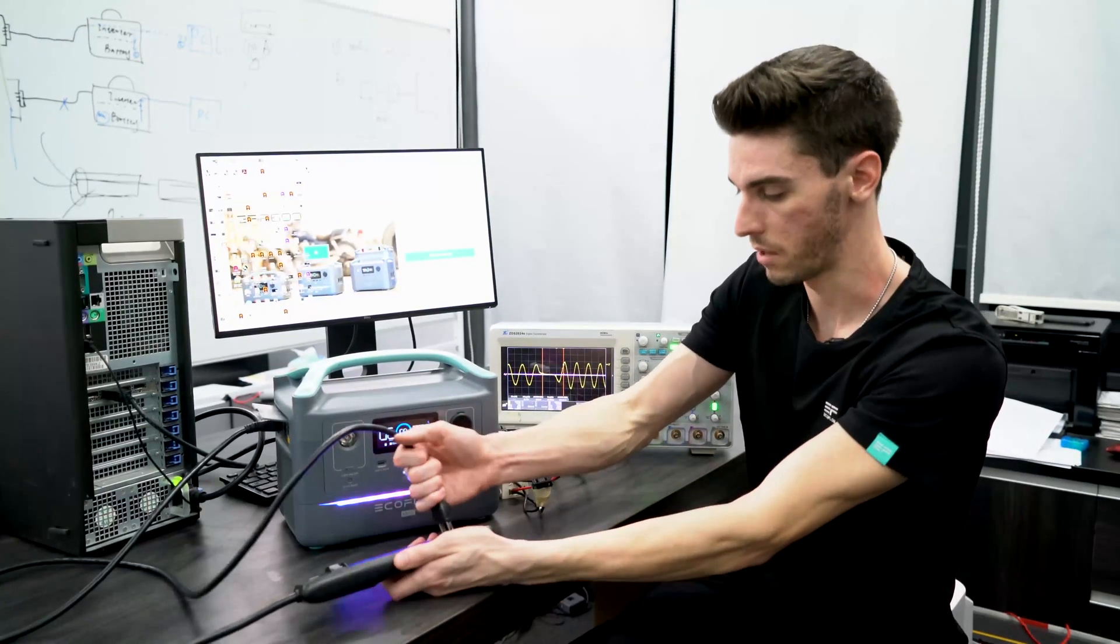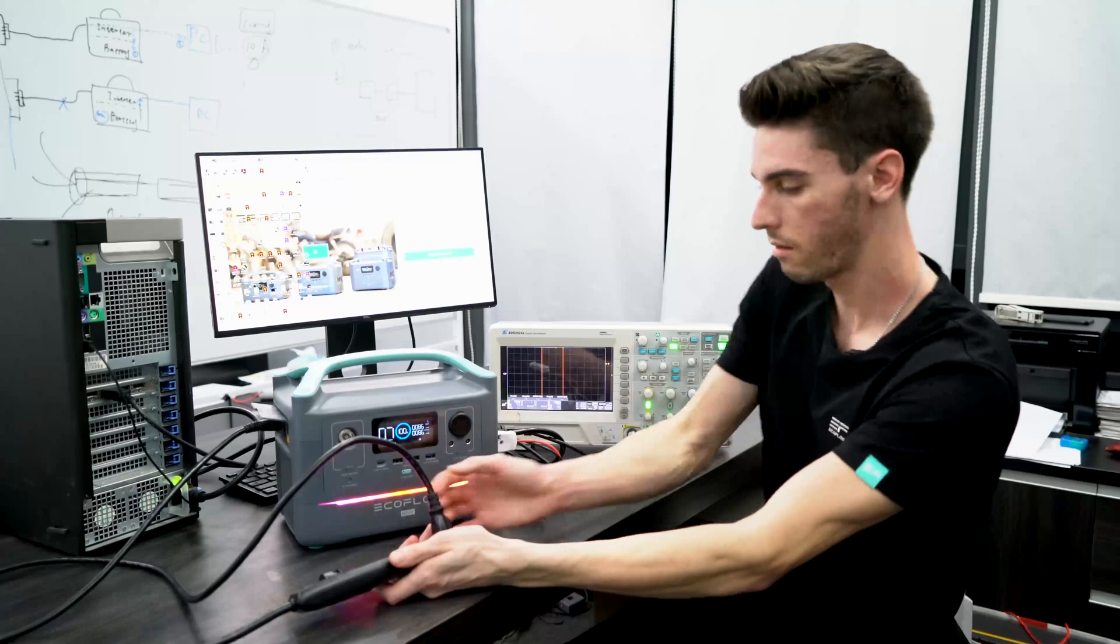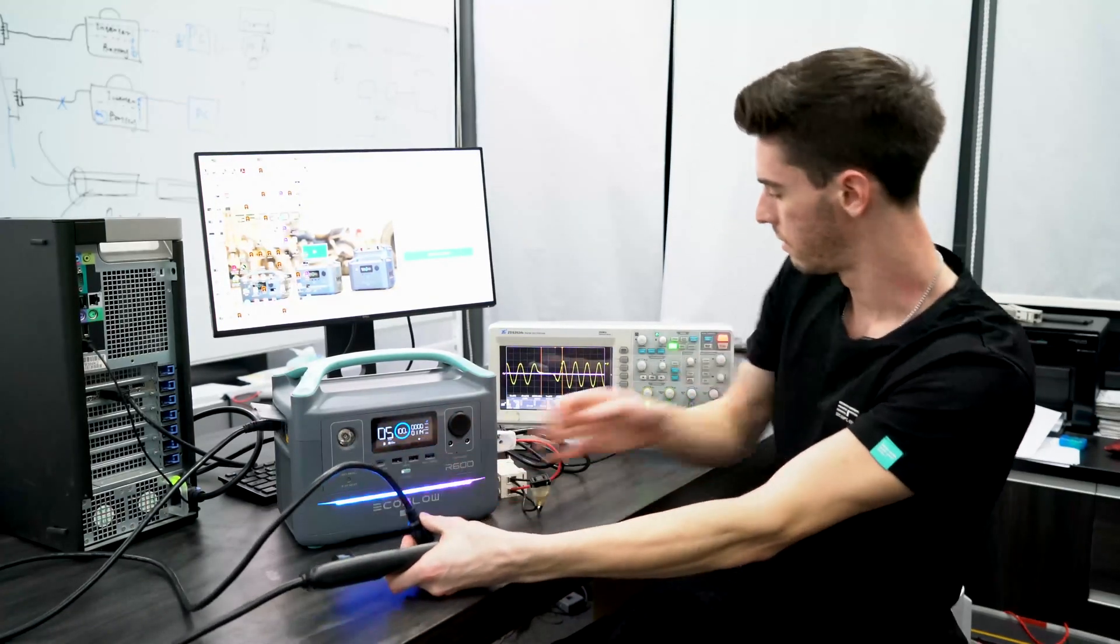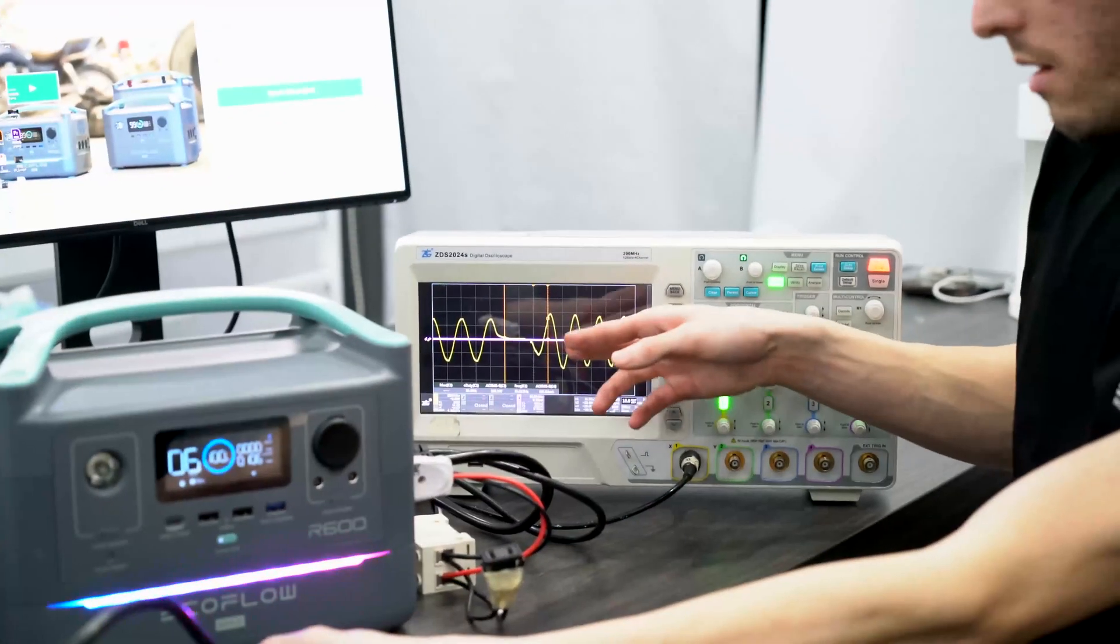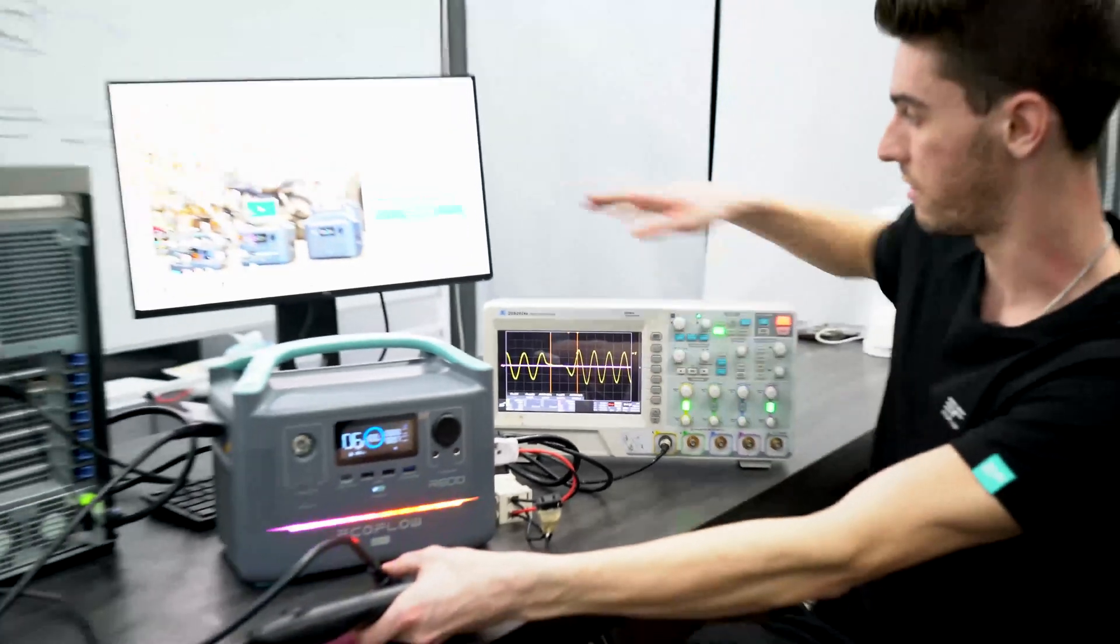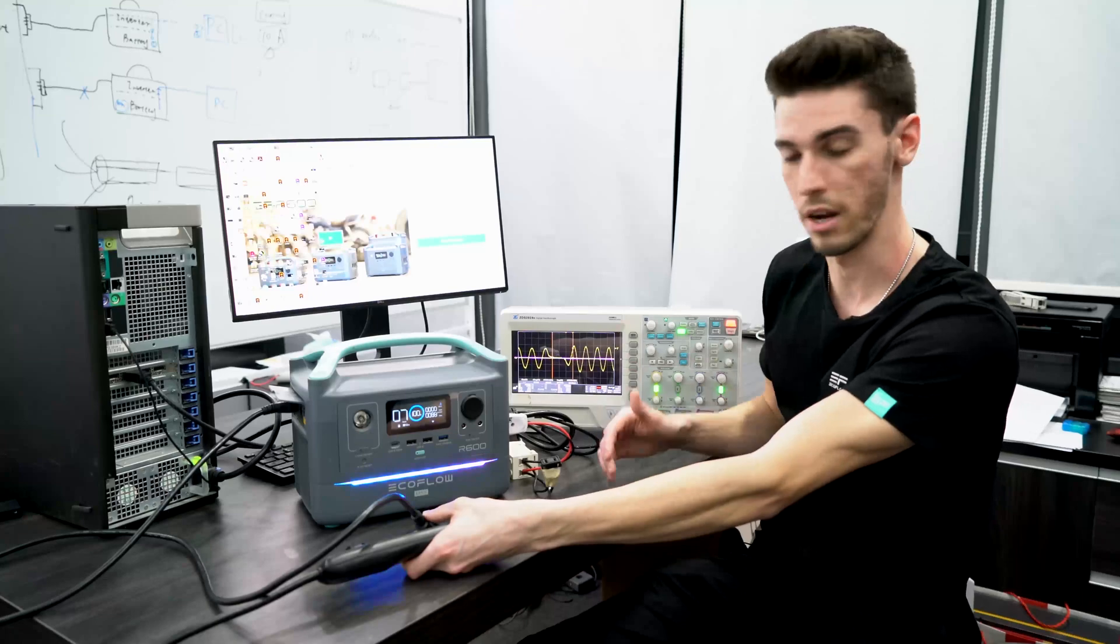But let's try it again and see what happens. One, two, three. So again, you can see this response here from the inverter switching from AC power to battery. And you can see that the monitor, the computer, and the oscilloscope are all still on. So it's working great.